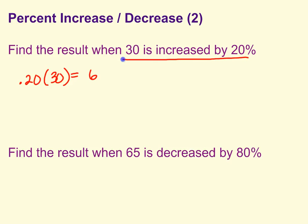Well, what did we start out with? We started out with 30, and if we are increasing by 6, that means we're going to add 6 to it, and we get 36. So find the result when 30 is increased by 20%. First, we figured out what 20% was. We got 6, then we increase by that amount with addition.